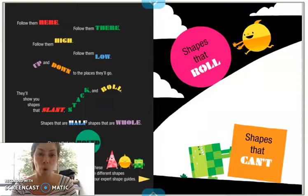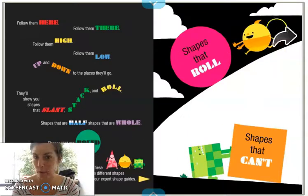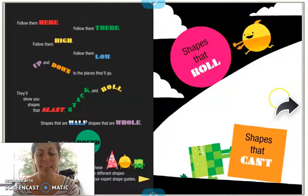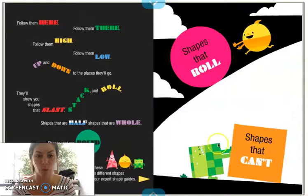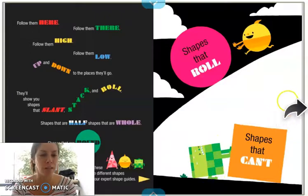Shapes that roll, like this yellow circle. Shapes that can't roll, like this green square.